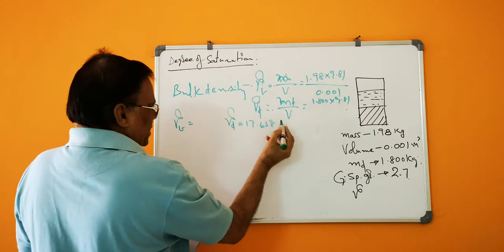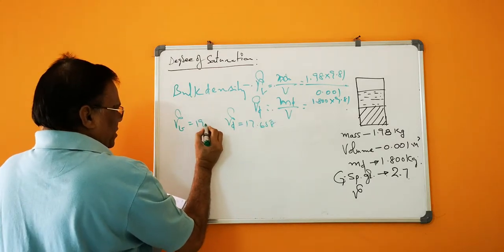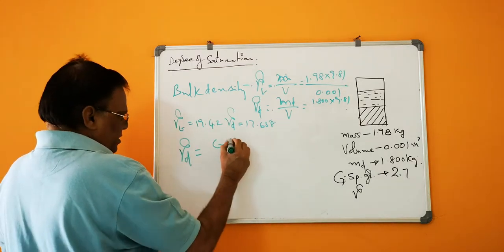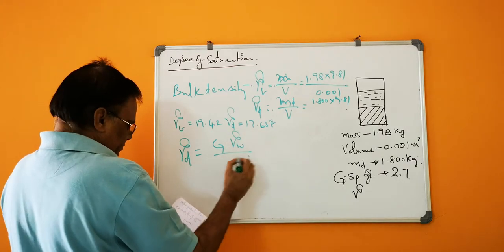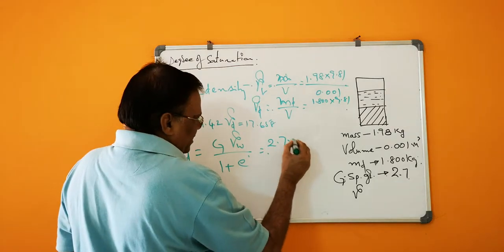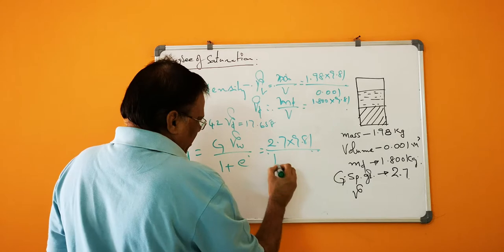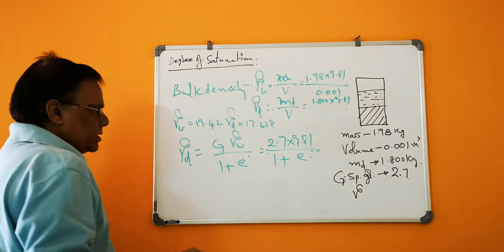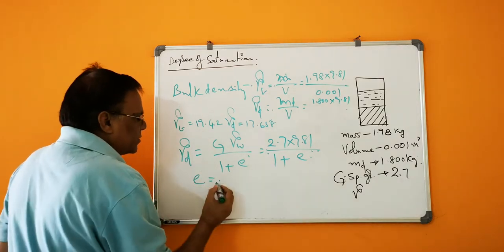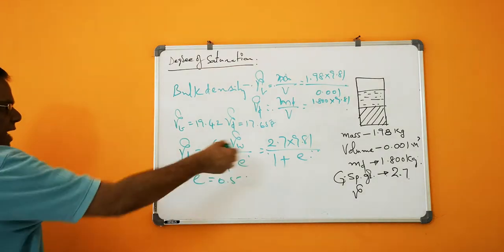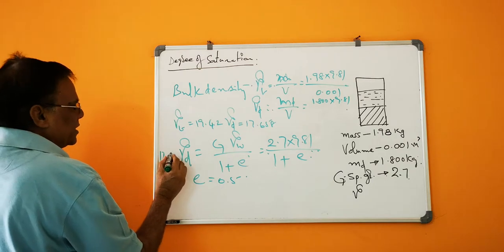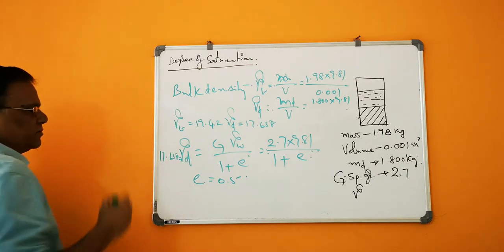So gamma d is equal to G plus gamma value by 1 plus e, so 2.7 into 9.81 divided by 1 plus e. So if you make it, e is equal to, you are getting 0.5. If you calculate this gamma d, if you make it 17.658 equal to, you make it equal to.